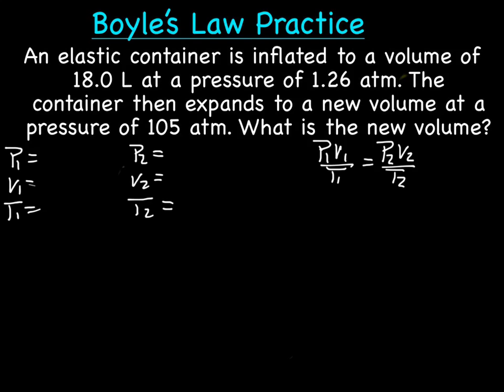Let's see if those are the 1s or the 2s though. So then it says the container then expands to a new volume, meaning that the 18 liters and the 1.26 ATM are the 1s. So we're going to expand to a new volume with a pressure of 105 ATM, and what is our new volume?